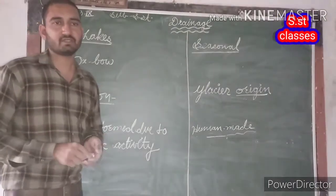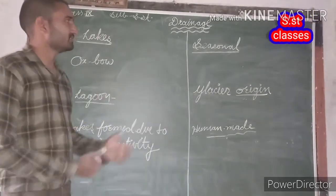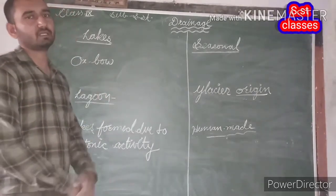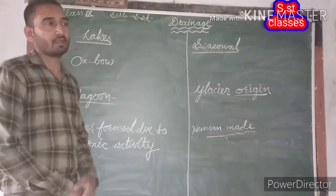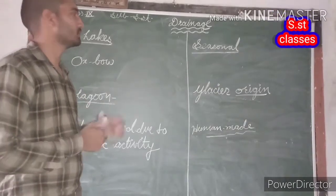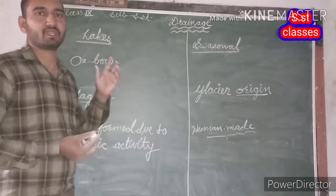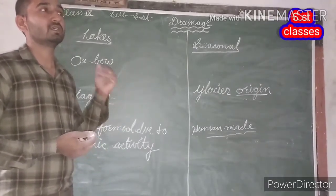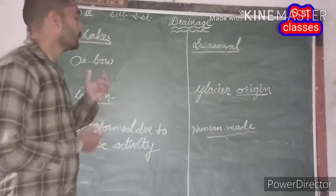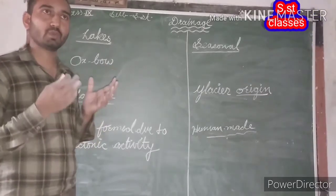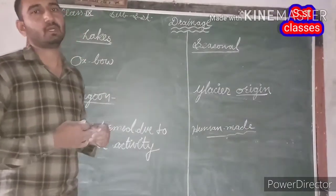Good morning, guys. Welcome back to our geography class. Let's begin for today. In the last lesson, we were discussing about rivers related to the peninsular plateau region of India. We discussed that the major rivers of peninsular regions are Narmada, Tapti, Krishna, Kaveri, Godavari, and Mahanadi. We discussed their origination points along with their total extension. And now we are going to discuss about lakes.